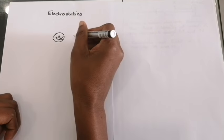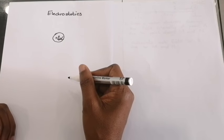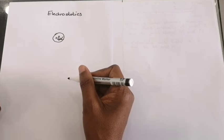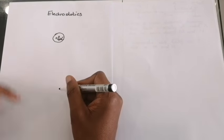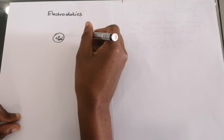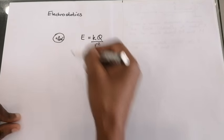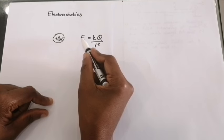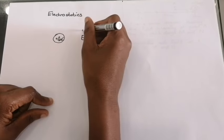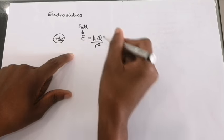This means there is an electrostatic field around that point charge. When we want to calculate the field intensity around a point charge, we use the equation E = kQ/r². Notice it almost looks like our Coulomb's law equation, except on the left side you have E for field instead of F for force, and on the right-hand side you only have one charge instead of two.